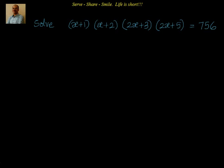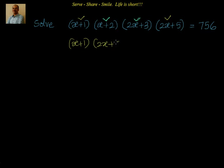What I am trying to say is: we will take x plus 1 and 2x plus 5 as one group, and we will also take x plus 2 and 2x plus 3 as another group, and we will try to multiply them. My next step will be: x plus 1 into 2x plus 5, multiplied with x plus 2 into 2x plus 3 — a little bit of rearranging.